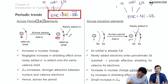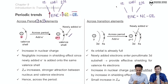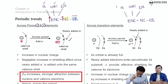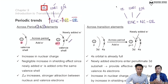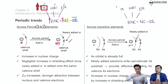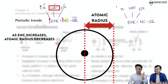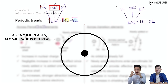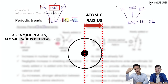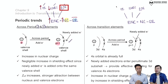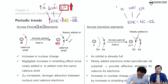As effective nuclear charge (ENC) increases across the period, the attraction between the nucleus and valence electrons strengthens. As a result: ionization energy increases (harder to remove electrons), atomic radius decreases (electrons are pulled tighter to the nucleus), and electronegativity increases (stronger attraction of bonding electrons in a covalent bond).